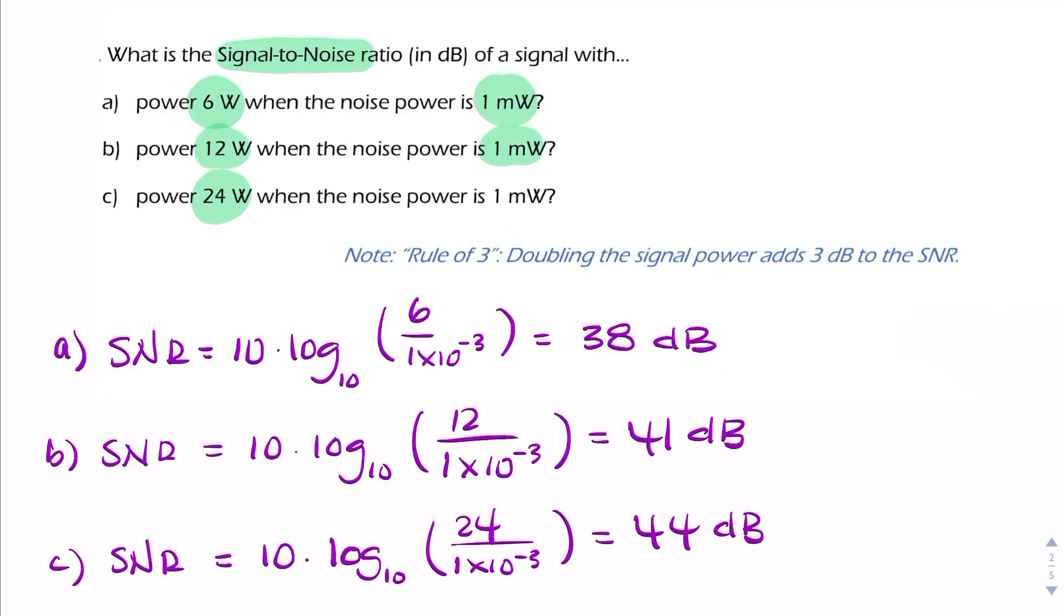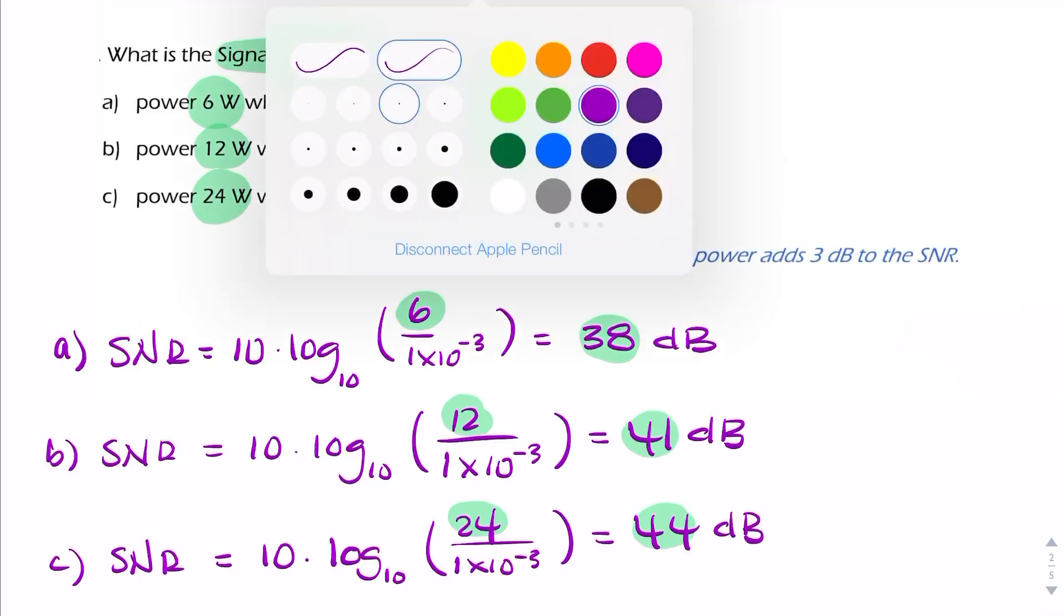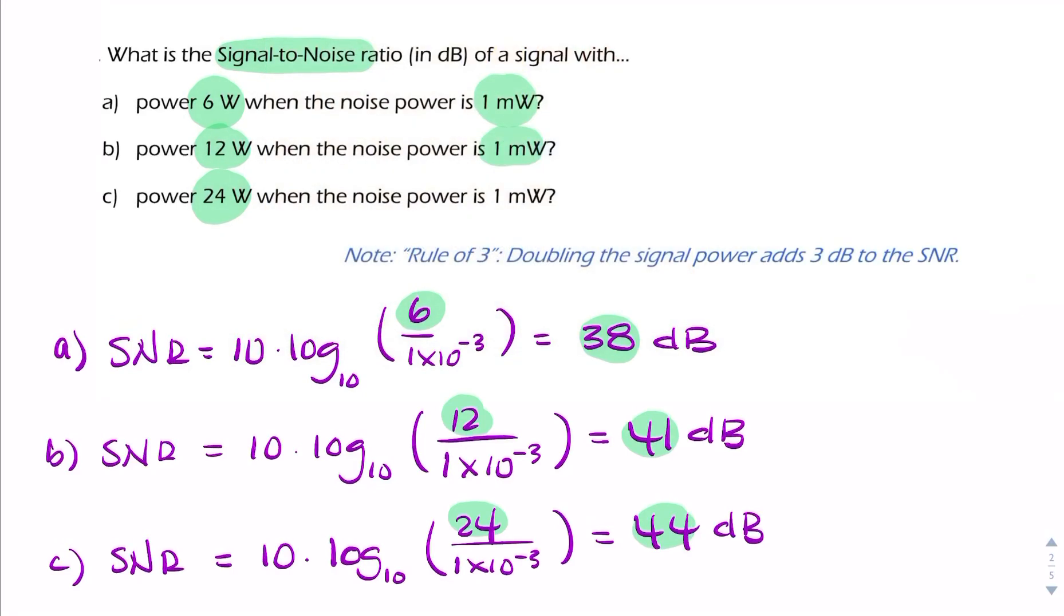An interesting observation here is that every time we double the signal power, going from 6 to 12, then from 12 to 24, we add 3 to the SNR. This is what we refer to as the rule of 3. Every time we double the signal power, we add 3 to the SNR.